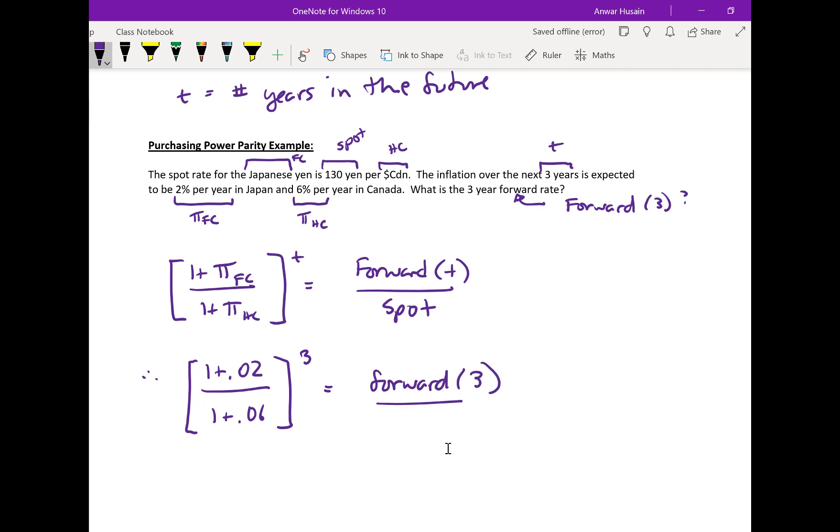Our variable is the forward rate in three years, and the spot rate is 130 today. If I rearrange that, the forward at time three is equal to 1.02 over 1.06 to the power of three, times 130. So it equals approximately 115 yen per dollar Canadian. That is going to be the forward rate for the yen and Canadian dollar based on this situation of inflation rates.